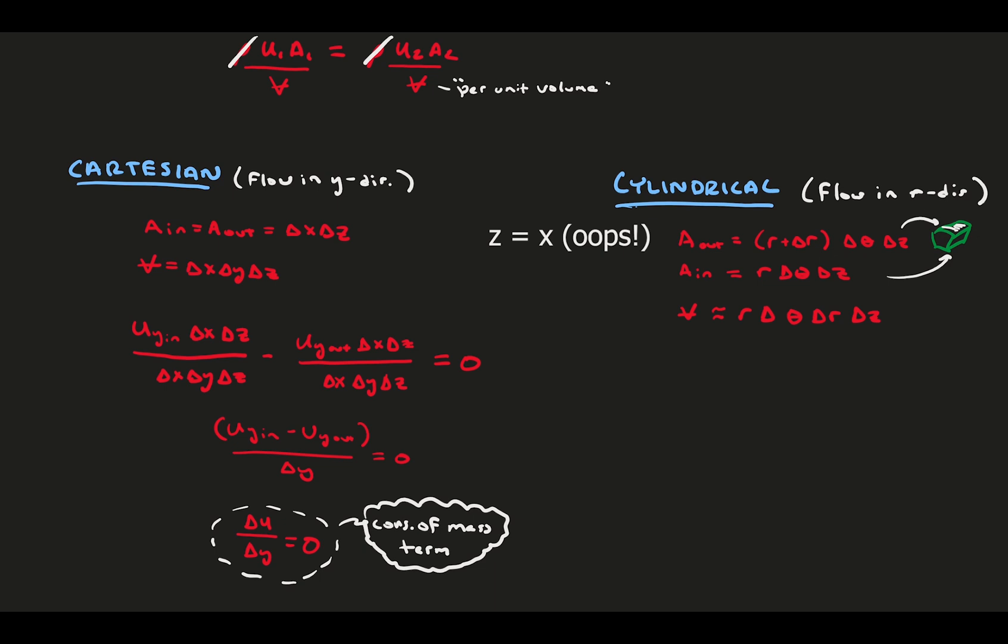Notice here that I messed up when writing these out, and I used z instead of r. These two are quite commonly interchanged in cylindrical coordinates, depending on the convention. While I did define it as x up above, I think it's important to leave in this mistake because it exposes one of the major flaws in fluid mechanics, inconsistent conventions. You always need to be thinking about the physical source of a variable, not just its label.